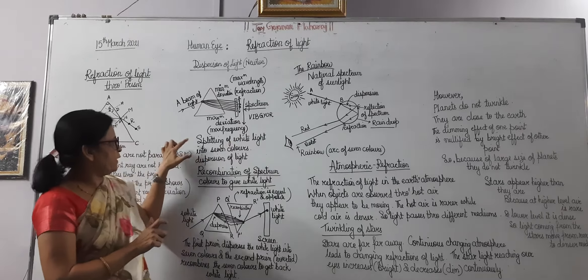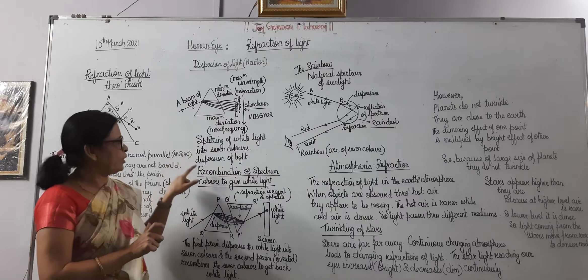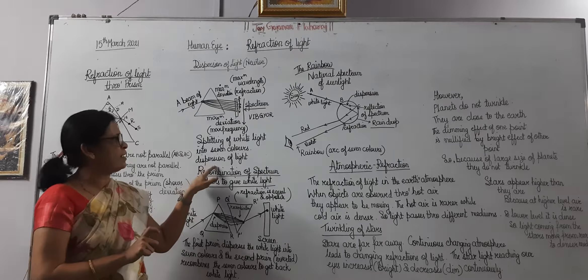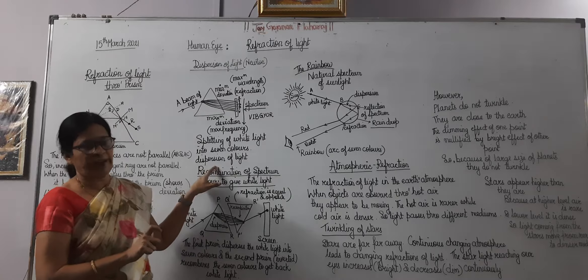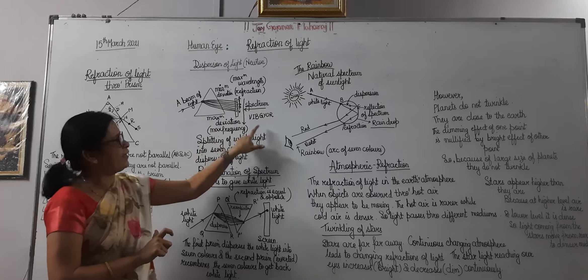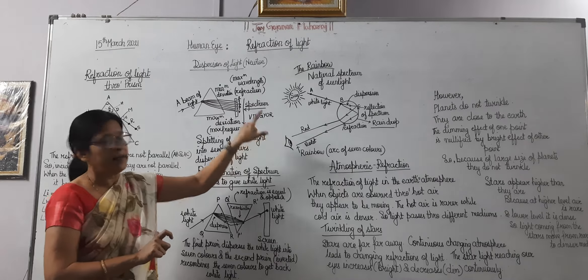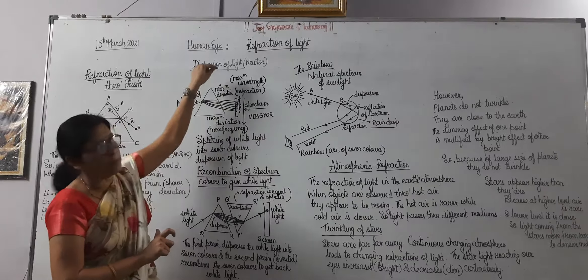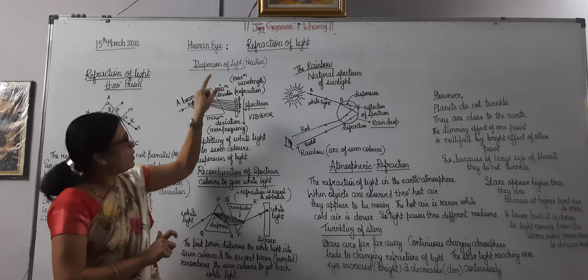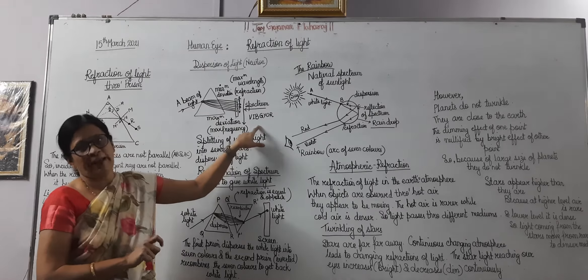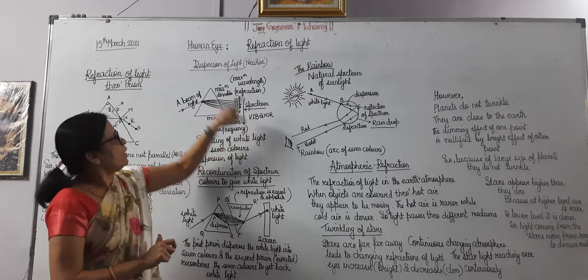The splitting of white light into seven colors is known as the dispersion of light. The seven colors are: violet, indigo, blue, green, yellow, orange, and red. Red undergoes minimum deviation and violet undergoes maximum deviation.